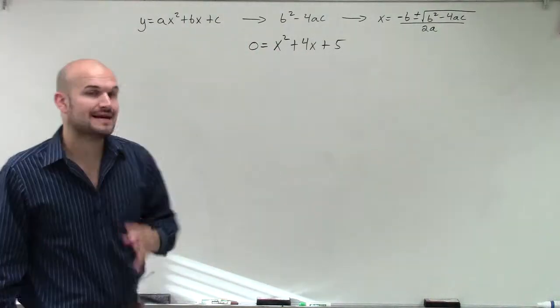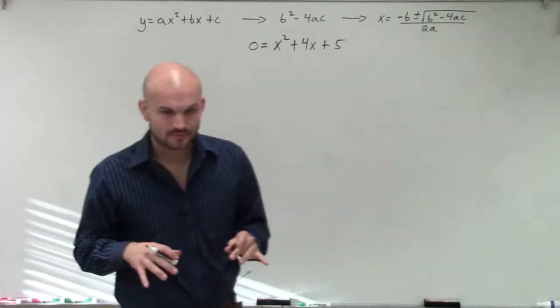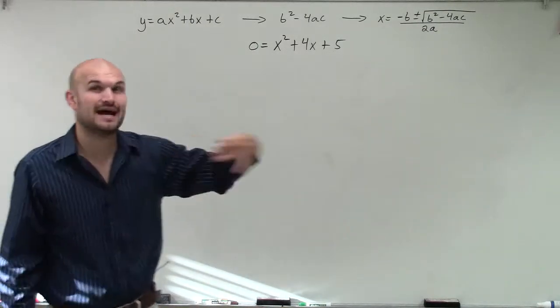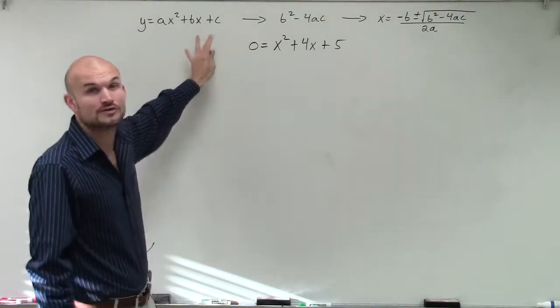There's a couple steps that we have to make sure we follow. First of all, our quadratic equation or function has to be in standard form, ax squared plus bx plus c. It cannot be in vertex form. Otherwise, we have to make sure we convert it back over to the standard form.